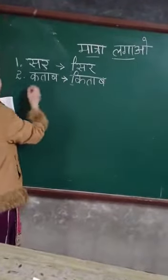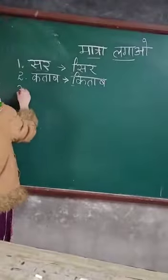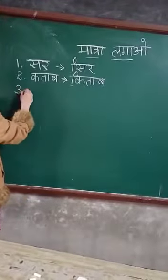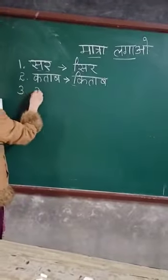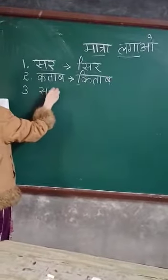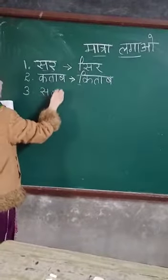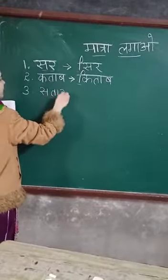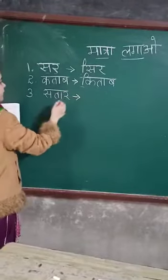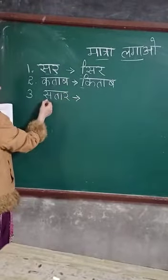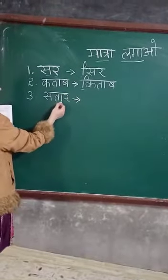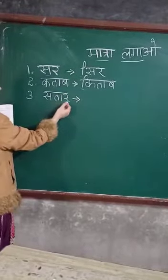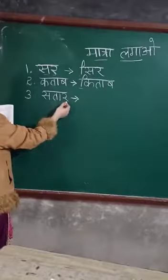Now our third word is Sar, ta, ko, a, r — star, okay? Sar, ta, ko, a, r — star.